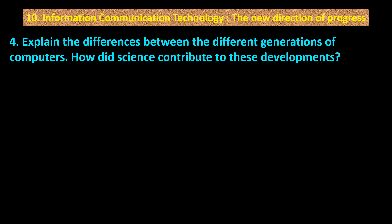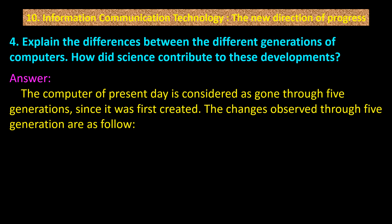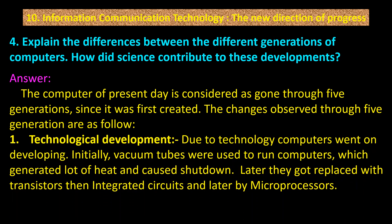Question number 4: Explain the differences between the different generations of computers. How did science contribute to these developments? Answer: The computer of present day is considered to have gone through five generations since it was first created. Point 1 — Technological development: due to technology, computers went on developing. Initially vacuum tubes were used to run computers, which generated a lot of heat and caused shutdown. Later they were replaced with transistors, then integrated circuits, and later by microprocessors.